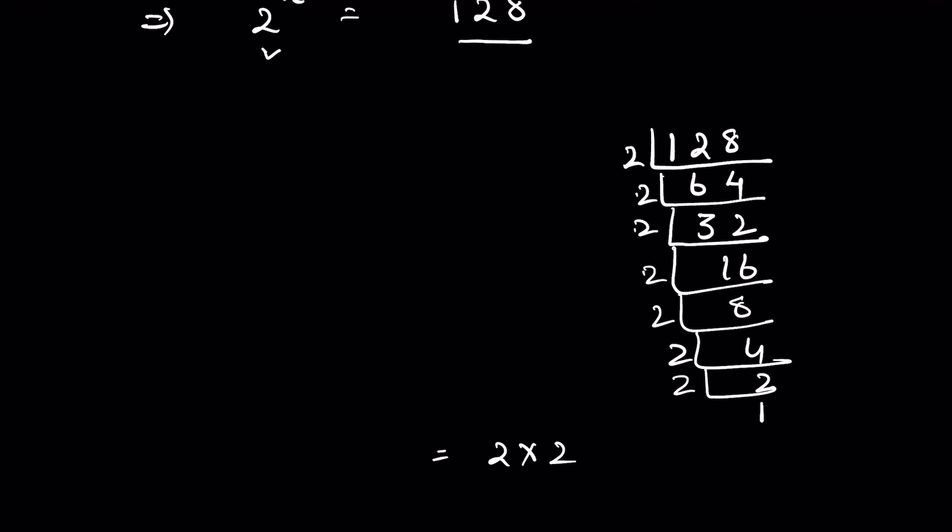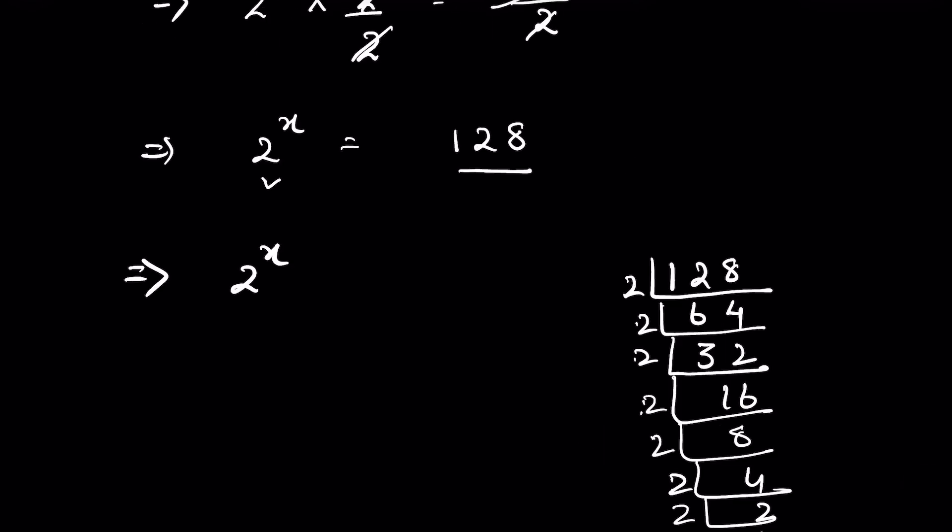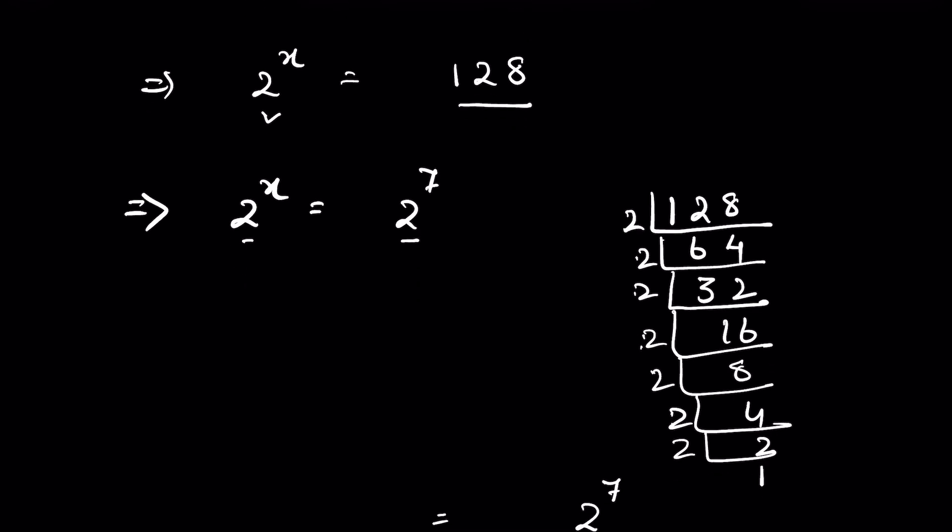So we can write it as 2 to the power 7. 2 to the power x is equal to 2 to the power 7. Now bases are the same, so we can compare the exponents. So x is equal to 7.